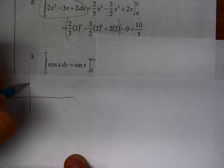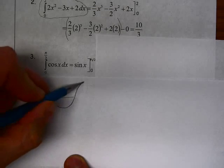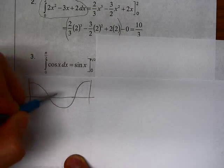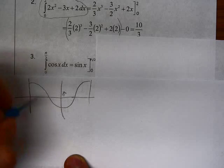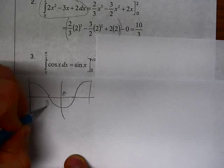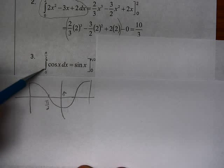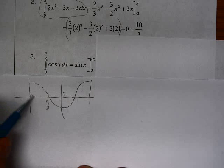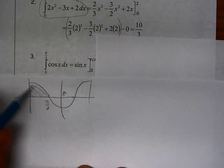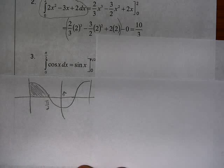we have cosine, this is π, so here is π over 2. So this definite integral from 0 to π over 2 of cosine of x dx represents this area that we're trying to find.